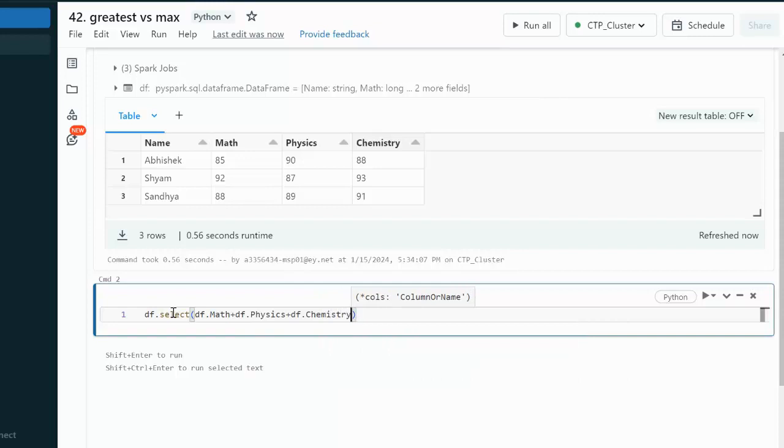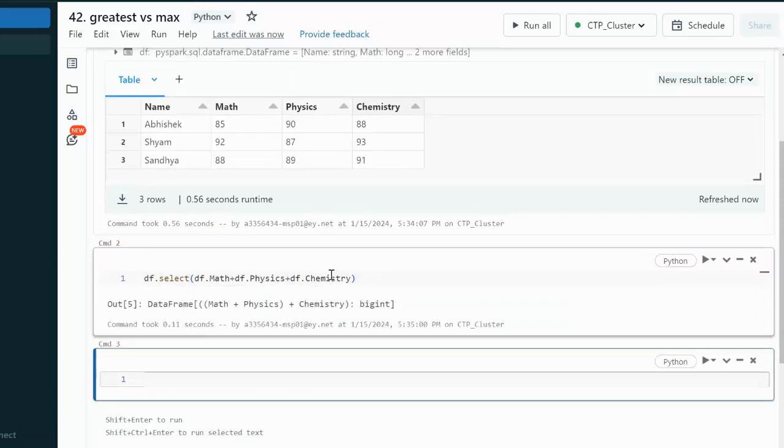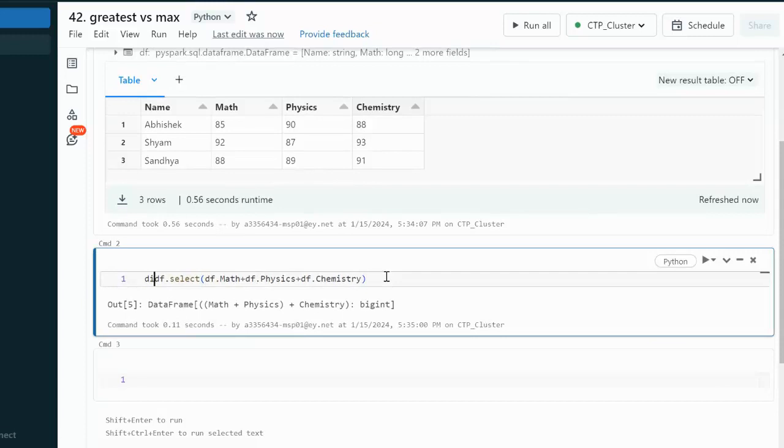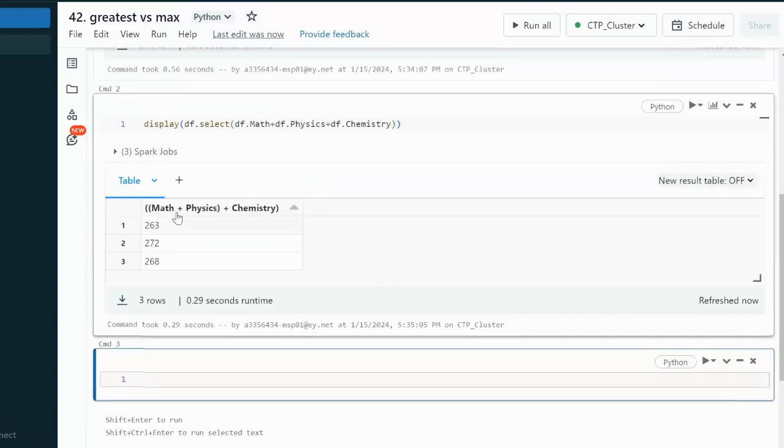Let me try to execute this and we will see the output. Let me use the display function for checking the output. Here we can see it is having a single column for the total max and here we could use the max function.